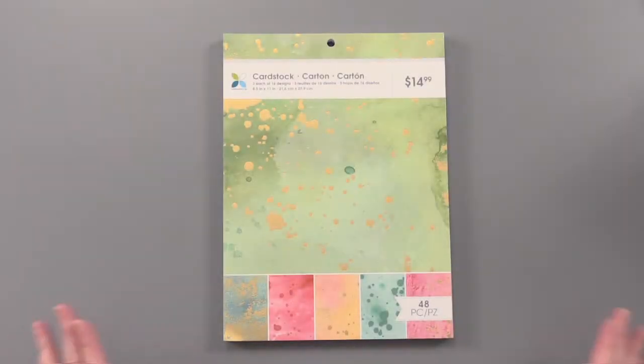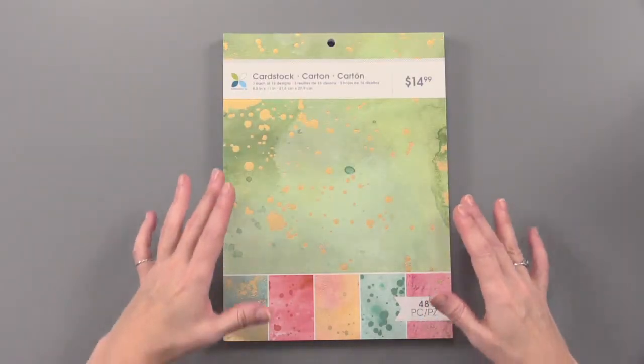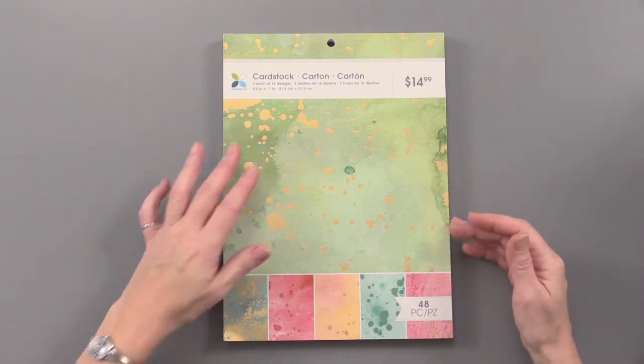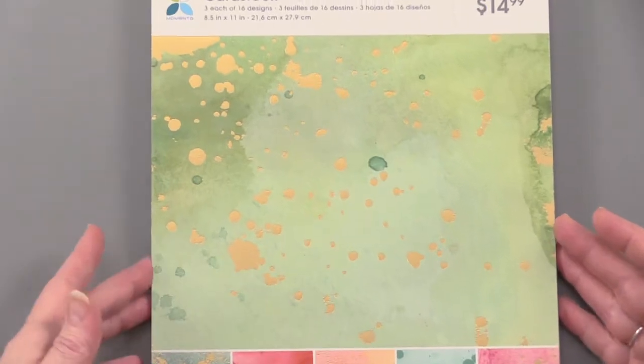From Momenta, Metallic Inks Cardstock has watercolor patterns with inked and foiled spattered details. You can see that right on the front and it is so unique.